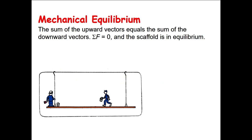Let's take an example. You have two men here standing on a scaffold. The scaffold is not moving — it is at rest. If you think about the upward and downward direction, there is no motion. The whole system — that's the two men and the scaffold — they are not moving upward or downward. So this is an example of equilibrium.